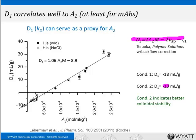Going back to our protein under two conditions: D1 for condition 1 was −18, indicating self-attraction; for condition 2, D1 was −10, also self-attractive but less so. Condition 2 therefore has better colloidal stability. This is simple to set up — just titrate a few different concentrations into the wells and off you go.